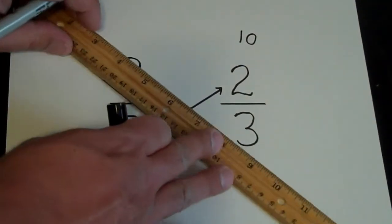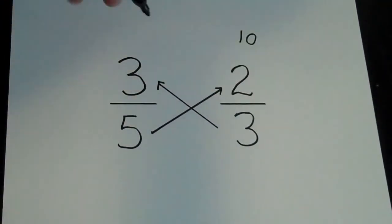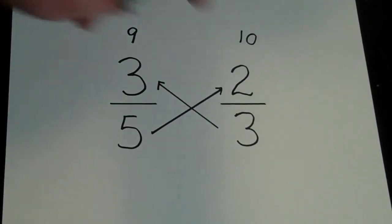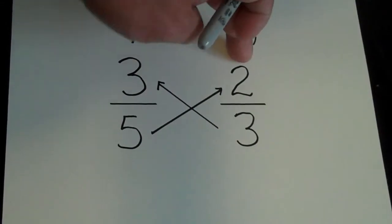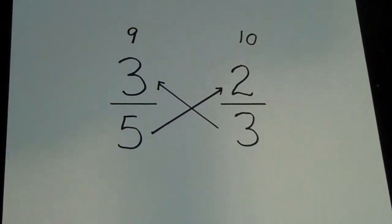And on this side, I'm going to multiply 3 times 3. And I'll put the 9 above that 3. And that's how you can tell which fraction is larger. The 10 is above the 2/3, so 2/3 is larger than 3/5. And that's the easy way.